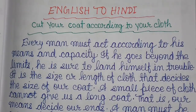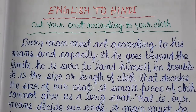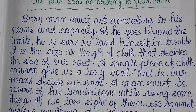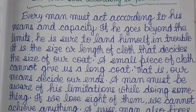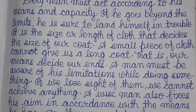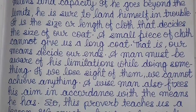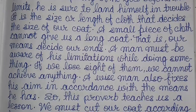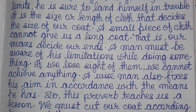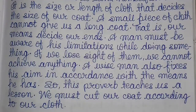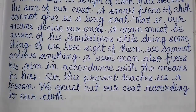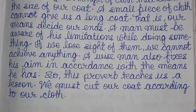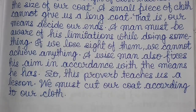Every man must act according to his means and capacity. If he goes beyond the limits, he is sure to land himself in trouble. It is the size or length of cloth that decides the size of our coat. A small piece of cloth cannot give us a long coat — that is, our means decide our ends. A man must be aware of his limitations while doing something. If we lose sight of them, we cannot achieve anything. A wise man also fixes his aim in accordance with the means he has. So this proverb teaches us a lesson: we must cut our coat according to our cloth.